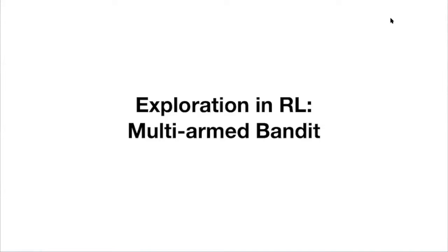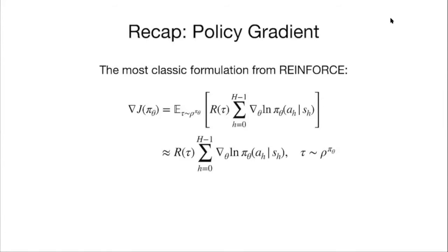Today we're switching topics to RL again and we're going to briefly talk about exploration. The model we'll focus on is the classic model called multi-armed bandit, which I'll explain in a second. Let's do a quick recap: before we were talking about imitation learning, and we ended the reinforcement learning section by summarizing policy gradient methods.